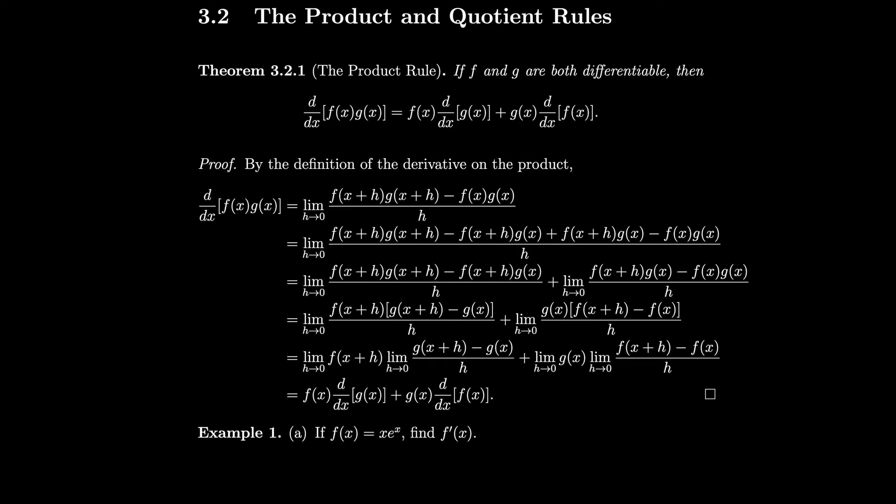Section 3.2: the product and quotient rules. If f and g are both differentiable, then the derivative of their product is the first function times the derivative of the second function, plus the second function times the derivative of the first function.